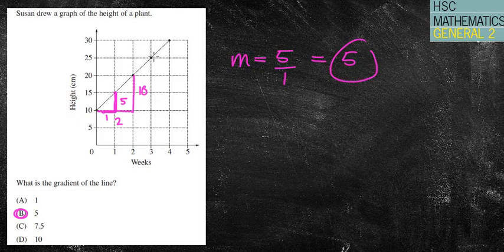25 over 25, sorry 15 over 3 which is 5. So each time we're still going to get the same answer of 5.